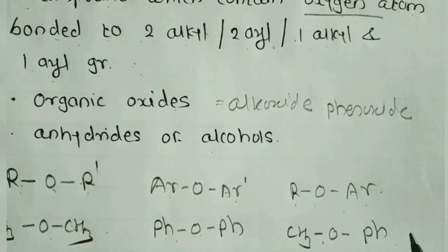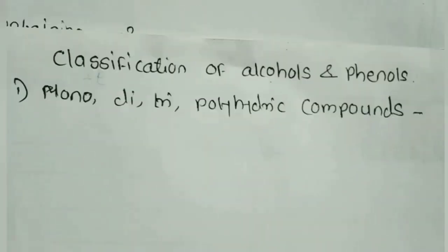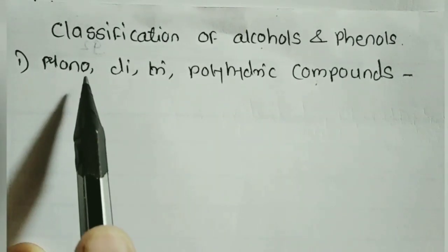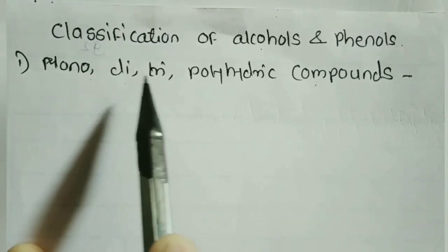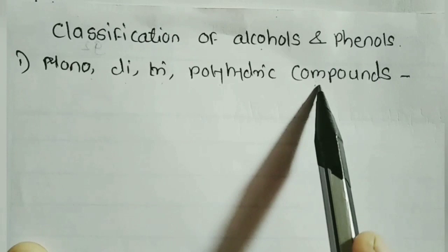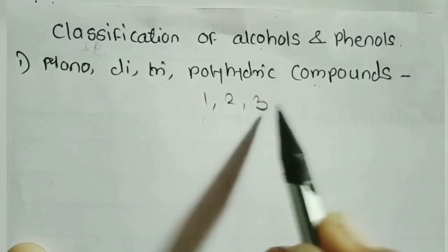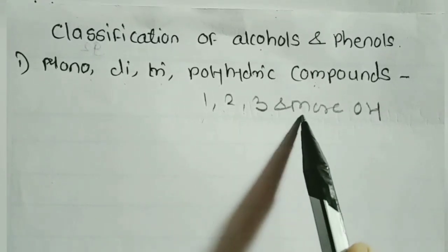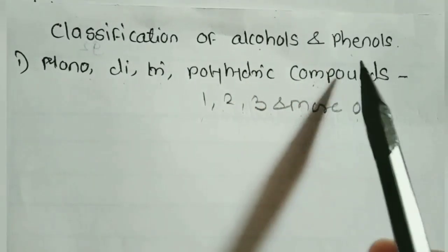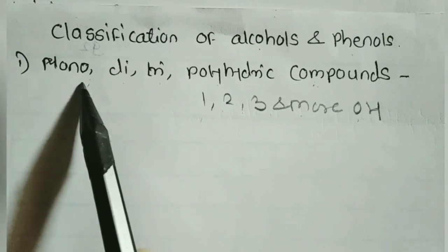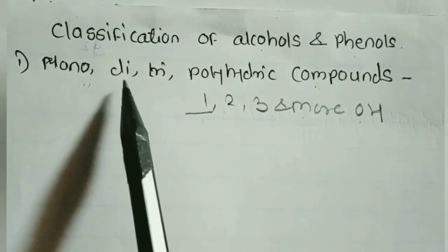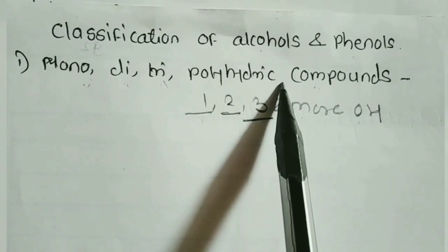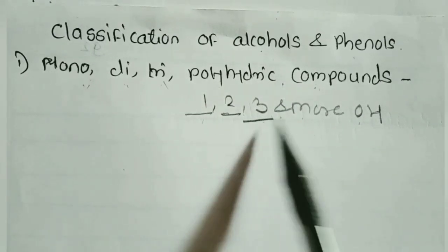The second point is the classification of alcohols and phenols. These are classified into monohydric, dihydric, trihydric, and polyhydric compounds on the basis of the number of hydroxy groups — 1, 2, 3 or more OH groups respectively. Monohydric means presence of 1 OH group; dihydric means 2 OH groups; trihydric means 3 OH groups; and polyhydric means more than 3 OH groups.